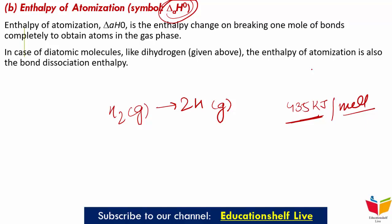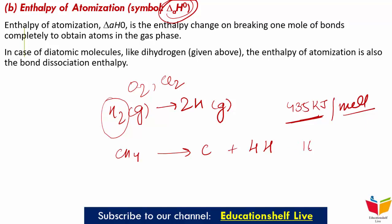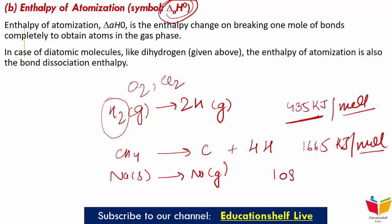In the case of diatomic molecules like dihydrogen, the enthalpy of atomization is also called the bond dissociation enthalpy. For diatomic molecules such as H2, O2, Cl2, atomization enthalpy and bond dissociation enthalpy are the same. For example, CH4(g) → C + 4H, with atomization enthalpy 1665 kJ per mol. For Na(s) → Na(g), the atomization enthalpy is 108.4 kJ per mol, which is similar to enthalpy of sublimation since solid converts directly to gas.